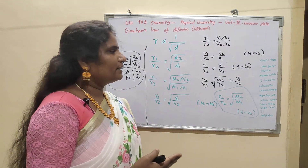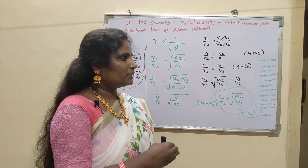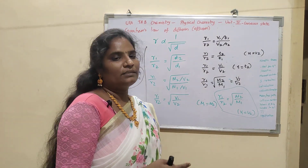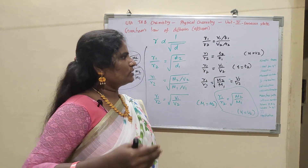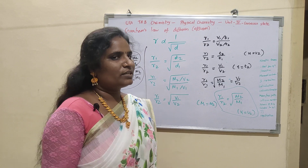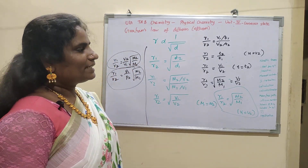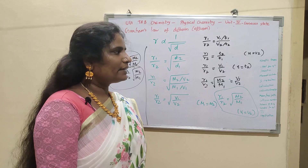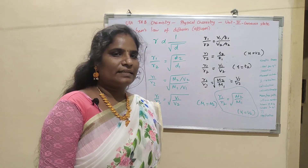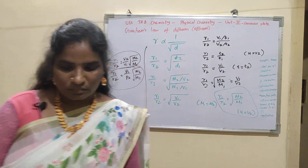In Graham's diffusion, the third aspect is the total pressure and partial pressure. In the next video, we deal with the kinetic gas theory equation. Thank you.